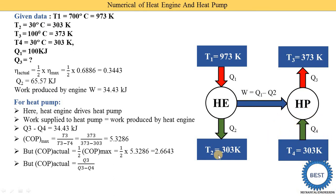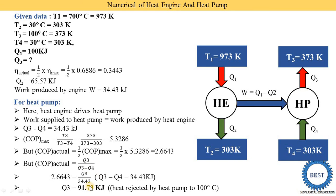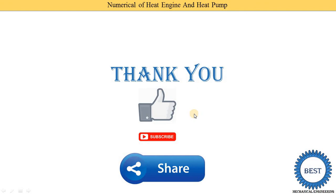Using actual COP = 2.6643 and work done = 34.43 kJ, we solve for Q3. Therefore Q3 = 91.73 kilojoules. This is the heat rejected by the heat pump at 100 degree centigrade (T3). Thank you for watching. If you learned something, like the video, subscribe, and share with your friends.